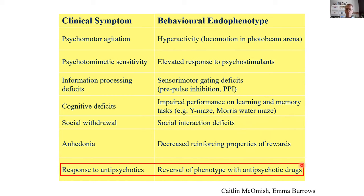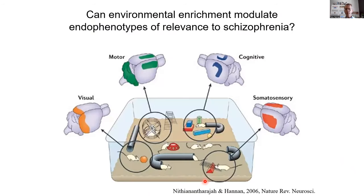We were also able to show predictive validity by giving these mice the drug clozapine — one of the most commonly prescribed antipsychotics, with atypical antipsychotics generally closely related to it — and showing some benefits in this model. That was all under standard housing conditions. We then compared this with environmental enrichment, randomizing the wild type and PLC beta 1 knockout mouse model of schizophrenia from weaning into standard housing versus environmental enrichment.